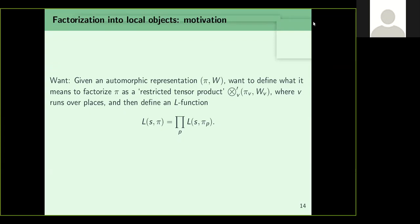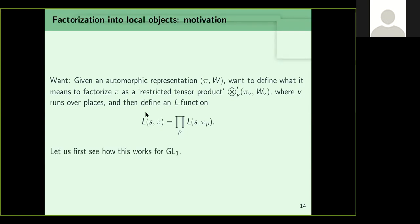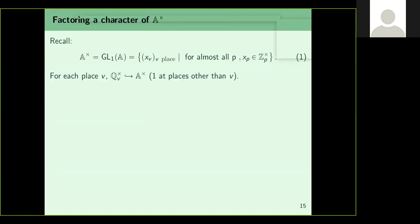Our next goal is number theory. Given an automorphic representation π, we want to factorize it as a tensor product over places, so that at any given time we only worry about one place. We then want to define an L-function as an Euler product. We first see how this works for GL1 instead of GL2.